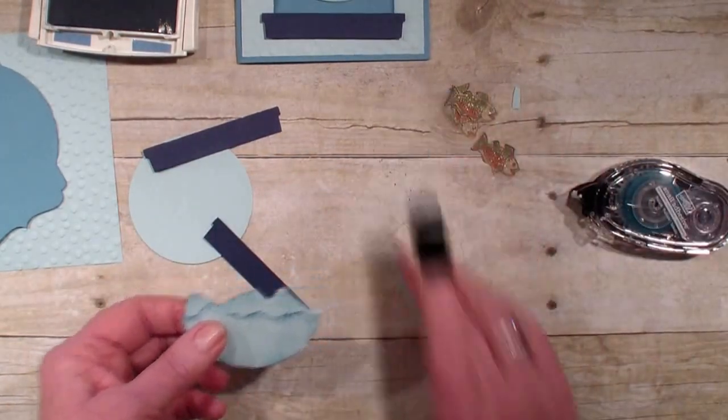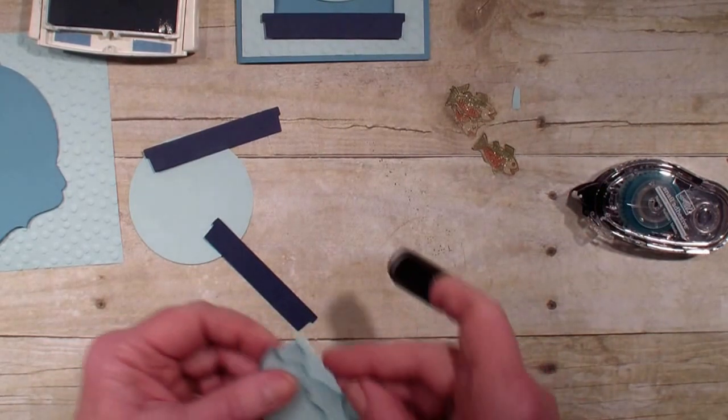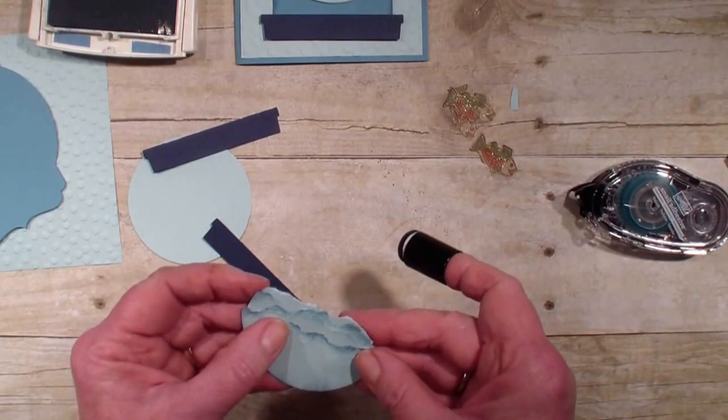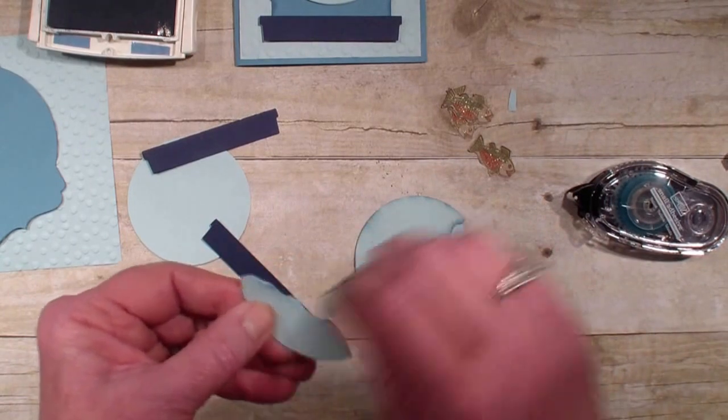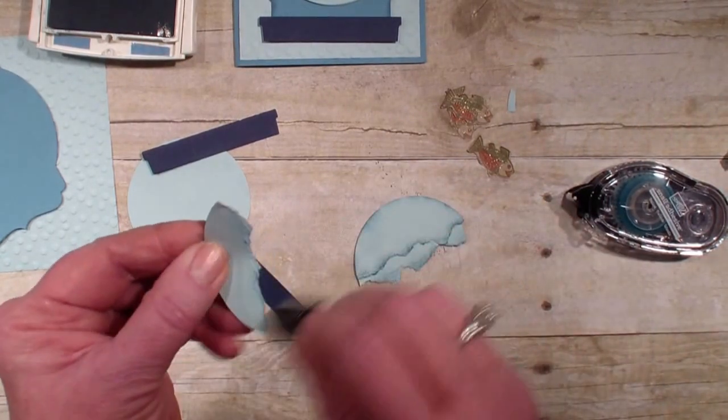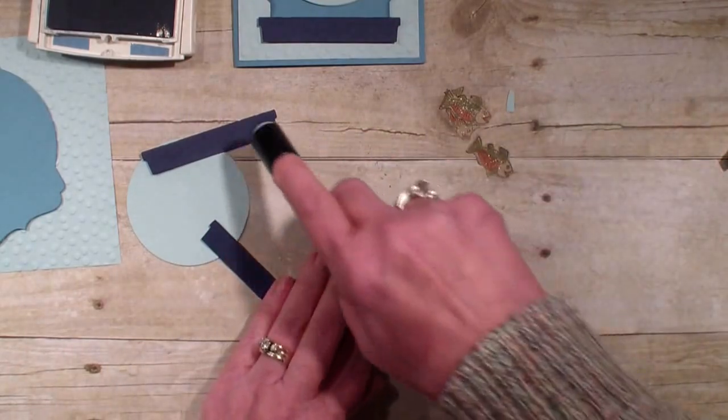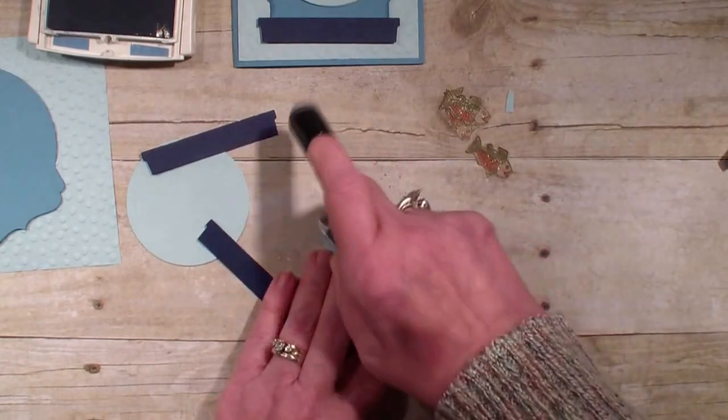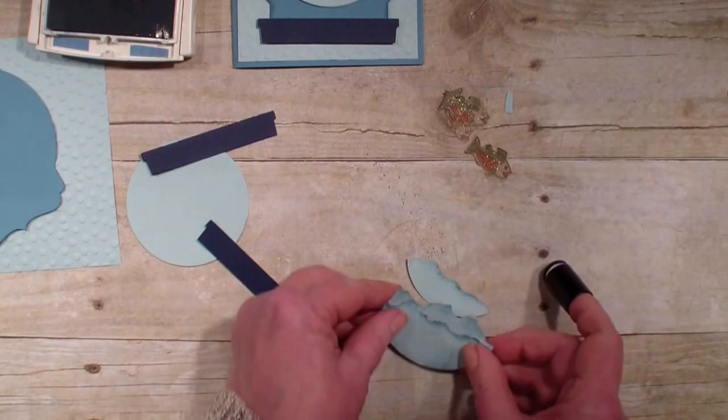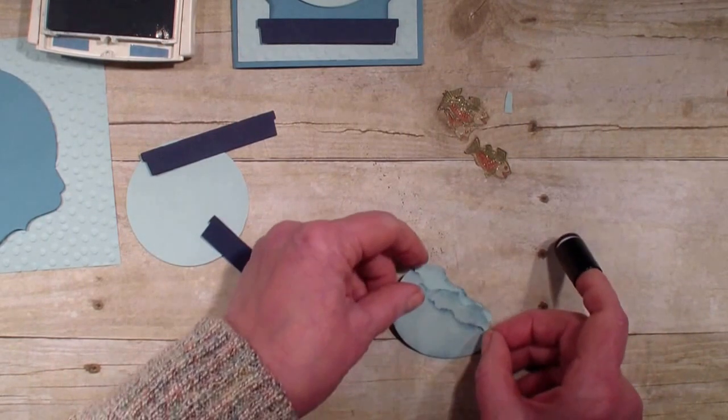Then we're going to add our final wave, and again, just add some dimension to it with that dauber, just making the waves a little bit darker. Every time you rip your circles, they turn out just a little bit different, and that's okay because our waves are different.